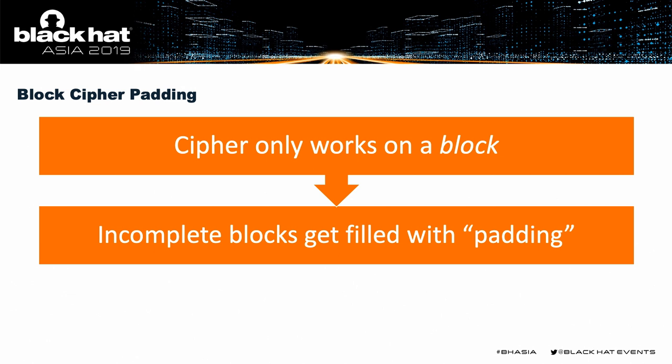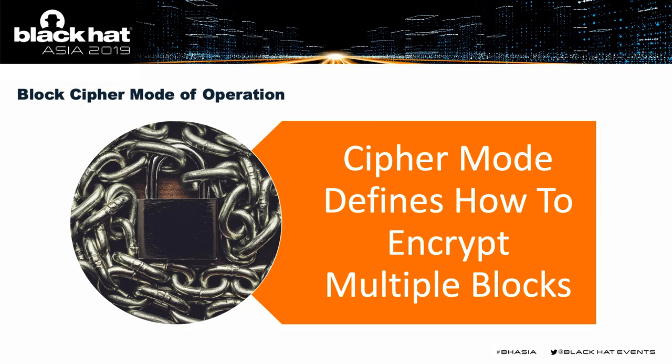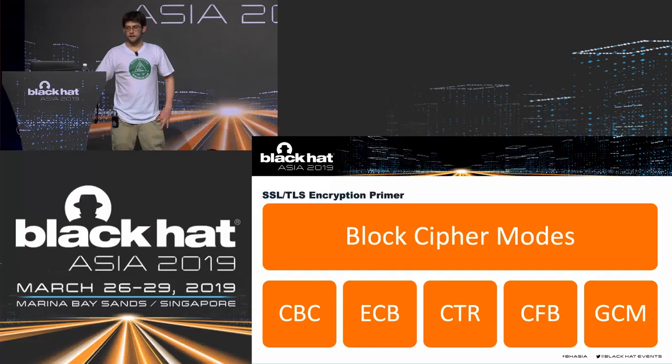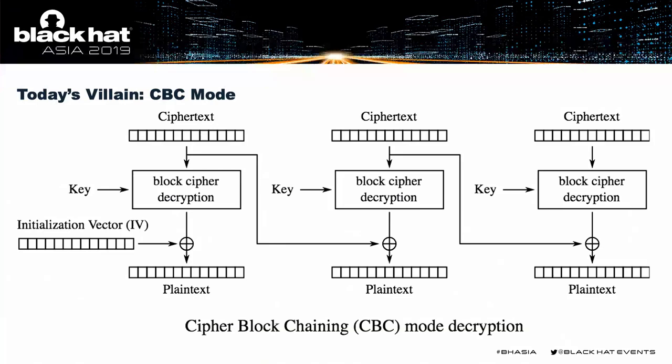When you have more than one block of data, you need to define a mode of operation for the cipher. There are a few of these — CBC, ECB (electronic code book), counter mode. The one we're focusing on today is CBC, or cipher block chaining. As you encrypt, you're binding things back through XOR with the previous ciphertext in a chain. The block diagram borrowed from Wikipedia is a little confusing, so we'll work through an example.